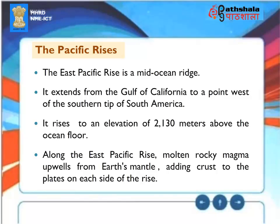The East Pacific Rise is a mid-ocean ridge extending from the Gulf of California to a point west of the southern tip of South America, rising to an elevation of 2,130 meters above the ocean floor. Along the East Pacific Rise, molten rocky magma upwells from the Earth's mantle, adding crust to the plates on each side of the rise.